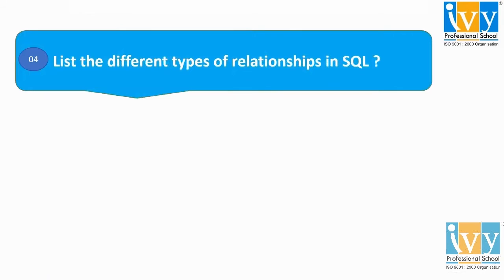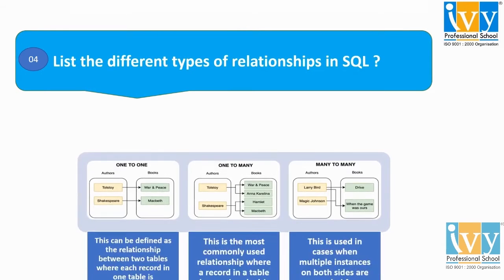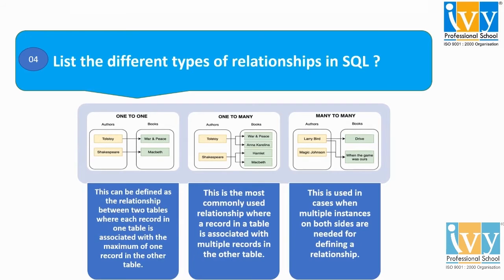Moving to the fourth question: list the different types of relationships in SQL. There are three types of relationships: namely, one-to-one, one-to-many, and many-to-many. Starting one by one. Firstly, one-to-one: the one-to-one relationship can be defined as the relationship between tables in which each record in a table is associated with the maximum of one record in another table. Here are two tables of author and books, in which a particular author is associated with a particular book in the other table.